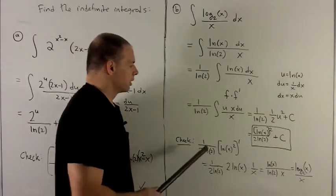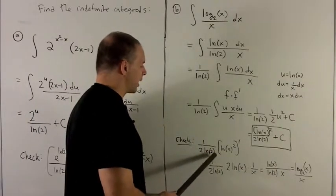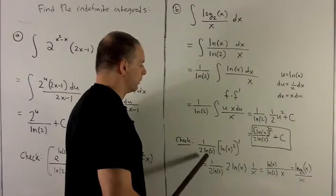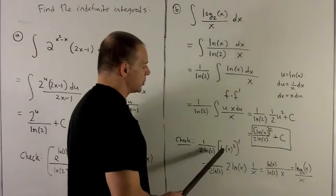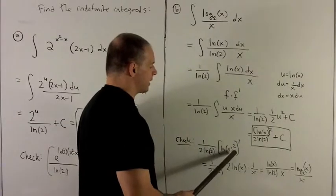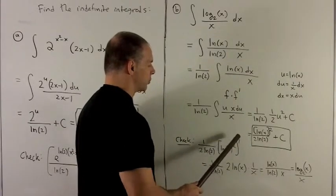Again, we check. So I pull the 1 over 2 natural log of 2 out. This is just a number. So we could just pull it out of the derivative. So now I'm just looking at taking natural log of x, quantity squared, and its derivative.